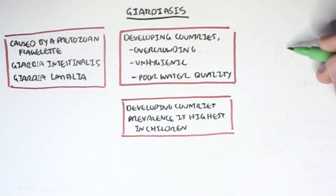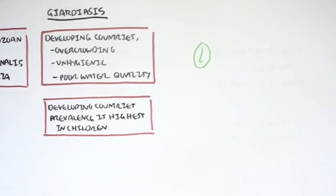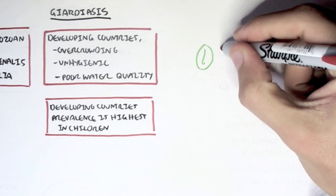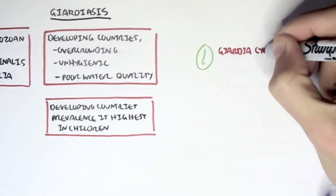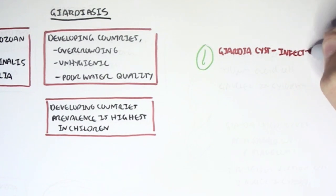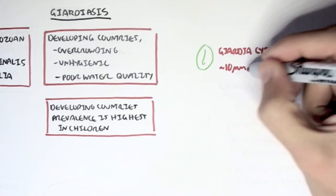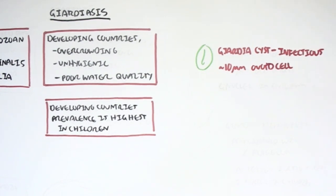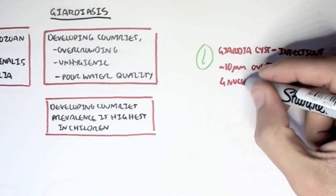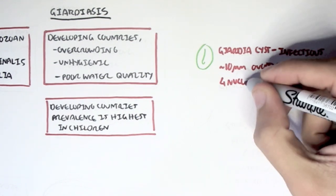Giardiasis is caused by the protozoan flagellate, as mentioned, Giardia intestinalis, or lamblia. There are two forms. There is the Giardia cyst, which is the infective form, which is about 10 micrometers in diameter and is an ovoid cell shape.